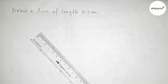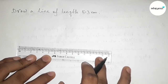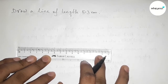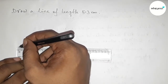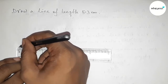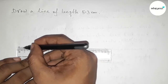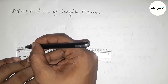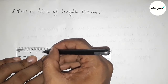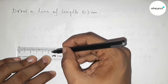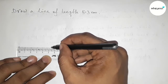First, putting the scale down and measuring the length 5.3 centimeters. Marking the starting point at 0. Now counting: this is 1 centimeter, this is 2 centimeters, this is 3 centimeters, this is 4 centimeters, this is 5 centimeters — 5.1, 5.2, 5.3 — so this is 5.3 centimeters.